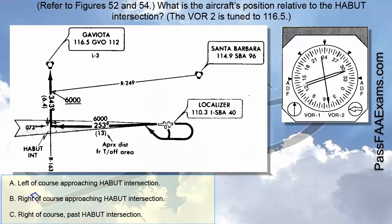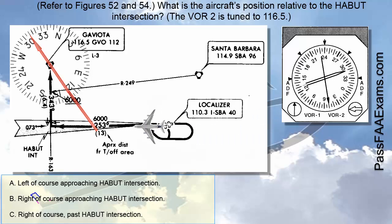And if we now align a compass rose with the Gaviota VOR as shown, and extend the line from the center of the VOR to the 130 radial, and then keep extending it to intersect the localizer course, we can clearly see that the airplane is located about halfway between the airport and HABIT intersection.